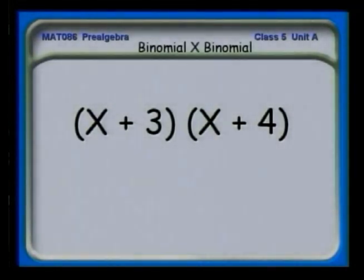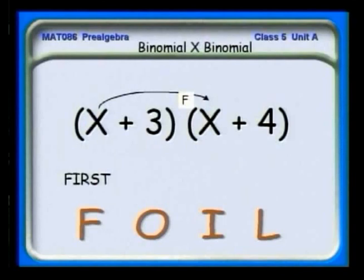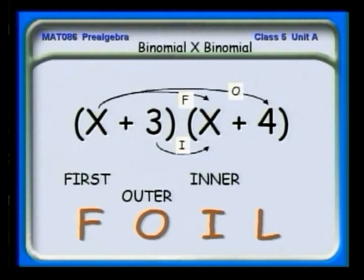Here's the same binomial we used before. The F stands for first — we multiply the first terms together. The O stands for outer — the term all the way to the left and the term all the way to the right. F is the two first terms together from the left and right binomials. O is the outside terms: x times 4. The I stands for inner, and the L stands for last.